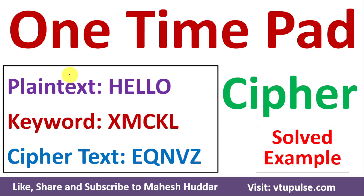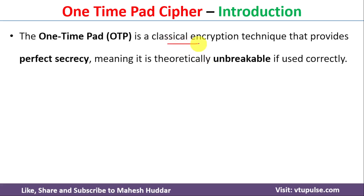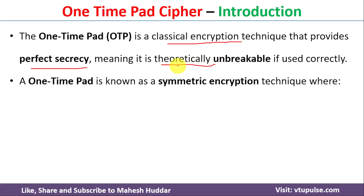Welcome back. In this video I will discuss the concept of one-time pad cipher with the help of a simple example. First, we will understand what a one-time pad cipher is. It is a classical encryption technique that provides perfect secrecy, meaning it is theoretically unbreakable if used correctly. A one-time pad is also known as a symmetric encryption technique.